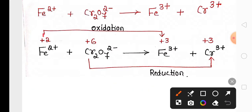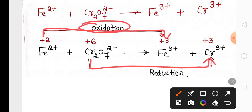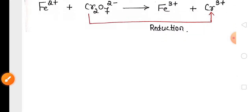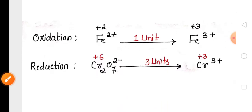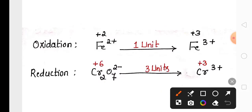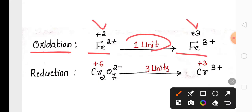Iron's oxidation number is increasing from +2 to +3, so it is oxidation. Chromium's oxidation number is decreasing from +6 to +3, so it is reduction. We write the oxidation reaction and reduction reaction separately. The unit difference for oxidation is 1 (between +2 and +3), and for reduction it is 3 units (between +6 and +3).